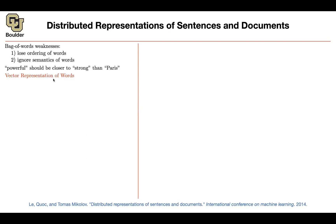So I'm going to go over word representations again because it's a very important topic, and then we'll expand on that. For word representations, you had a word matrix — basically your vocabulary. The rows are your words and the columns are the representations of those words. You also had a corpus of size T.